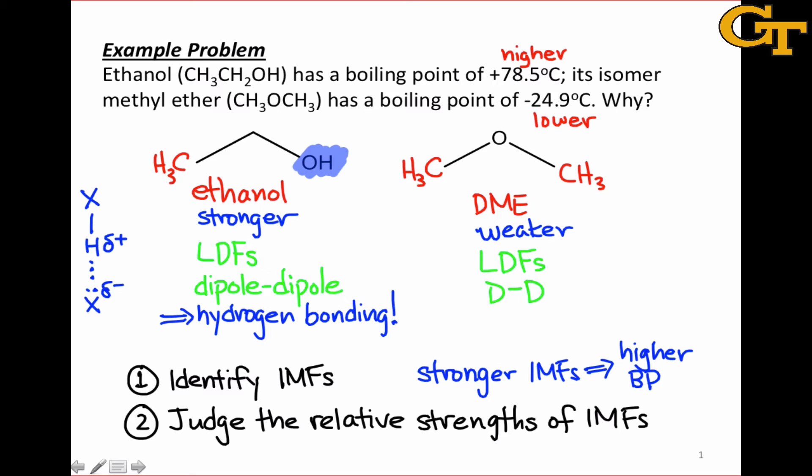In ethanol in particular, we can see that it fits this structural pattern, and we should expect that the OH group of one ethanol and the H end of that OH group can interact with the oxygen of another ethanol molecule in a hydrogen bonding interaction. It's this strong interaction that leads to the much higher boiling point of ethanol relative to dimethyl ether.